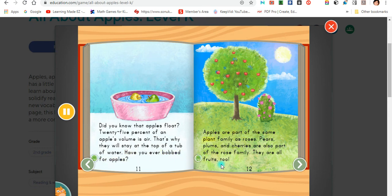Apples are part of the same plant family as roses. Pears, plums, and cherries are also part of the rose family. They are all fruits, too.